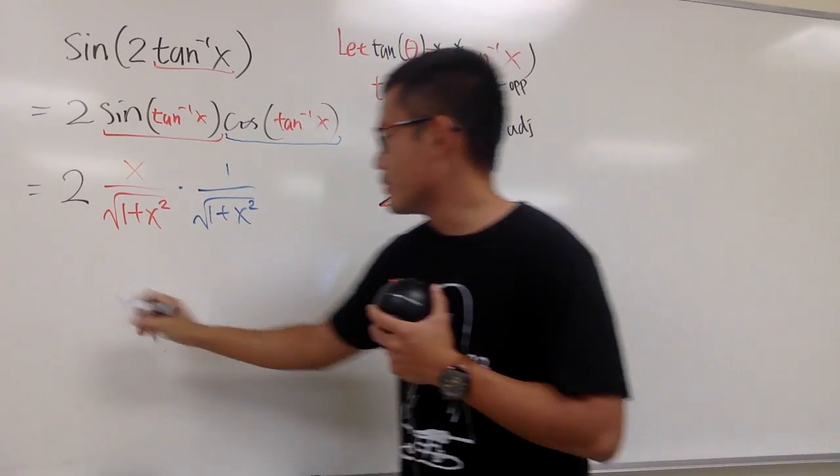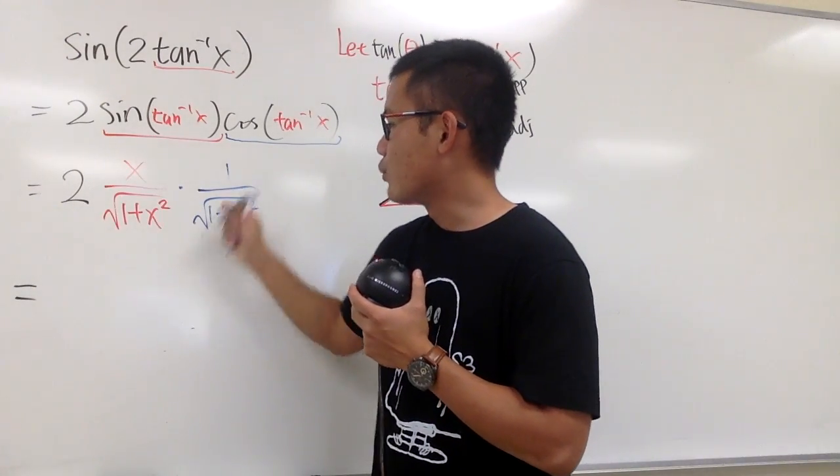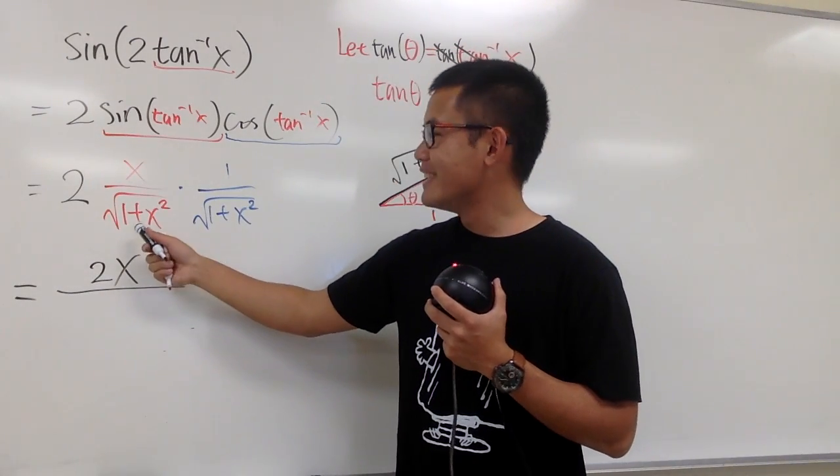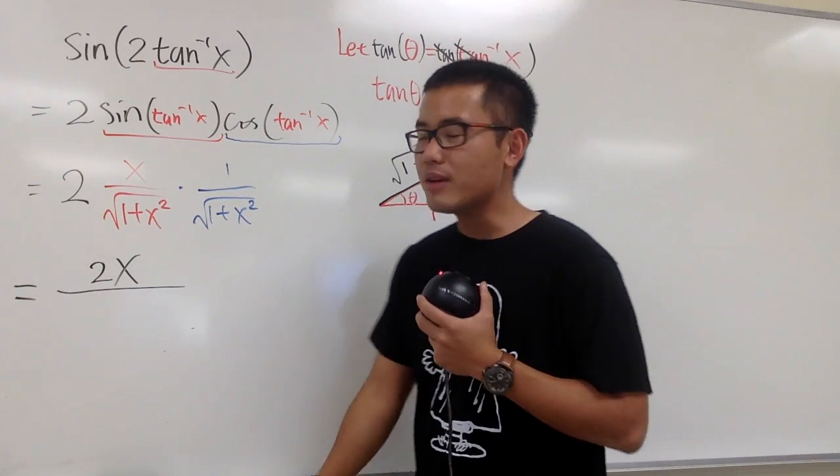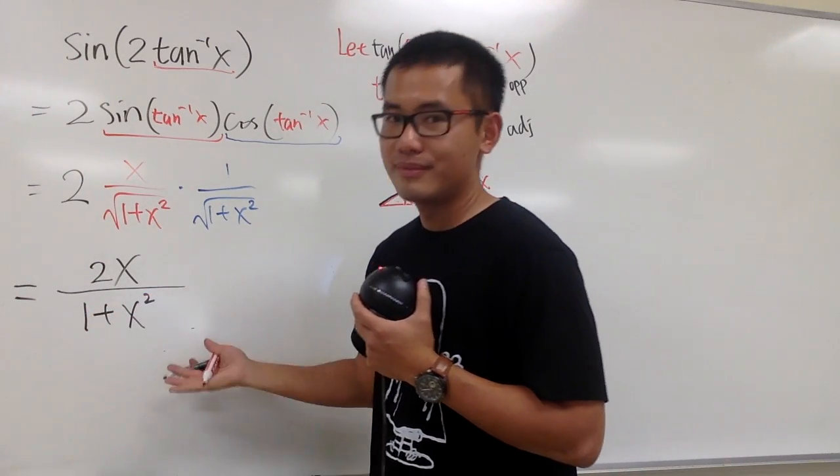At the end, what can we do? Of course, we can multiply the things on the top. Now, 2 times x times 1 is just 2x over—on the bottom, they are the same exact square roots, so the square root will cancel each other out, and we are just left with 1 + x².